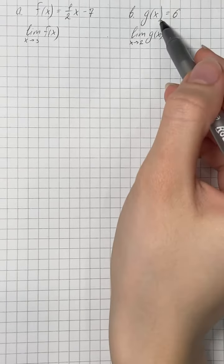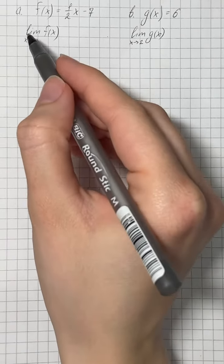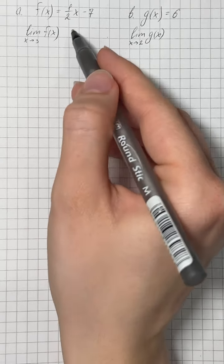We need to find limits of the given function, so we're going to start with limit as x approaches 3 of f of x.